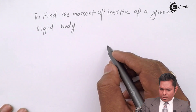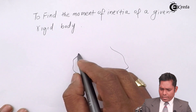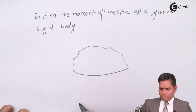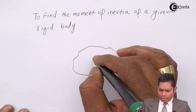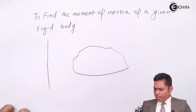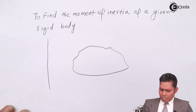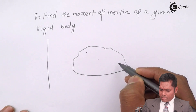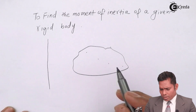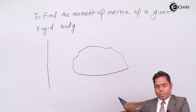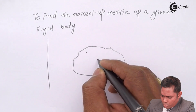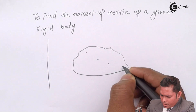Let us consider a rigid body of any arbitrary shape. Then we will take an axis — you can take the axis outside also, no problem with that. Consider n number of particles. This is particle number 1, 2, 3 and so on.